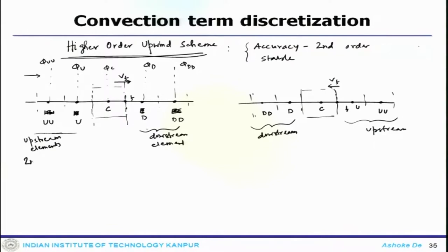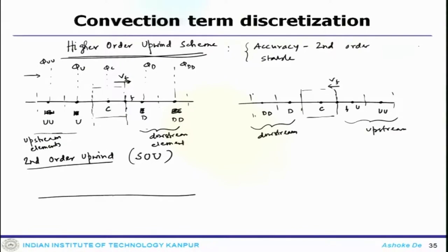Now we will start with the second-order upwind (SOU) scheme — what we have seen so far is the standard first-order upwind. We define a one-dimensional stencil with cell C and its cell interfaces. At a particular element face, the value upstream of it is labeled U, further upstream is UU, and downstream is D and DD.